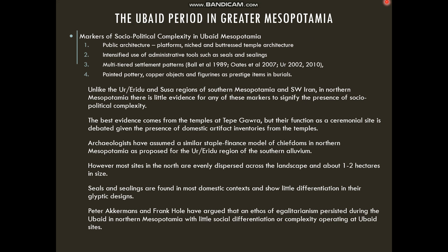However, most of our sites remain primarily small scale — about one hectare with a small village population — and are relatively evenly spaced across the landscape. Painted pottery, copper objects, and figurines appear as prestige items in burials. Unlike the Ur, Eridu, and Susa regions, we see very little evidence for markers suggesting sociopolitical complexity in the north. The best evidence comes from temples at Tepe Garwa, but their function is debated given the presence of domestic artifacts, and they may represent a ceremonial site.